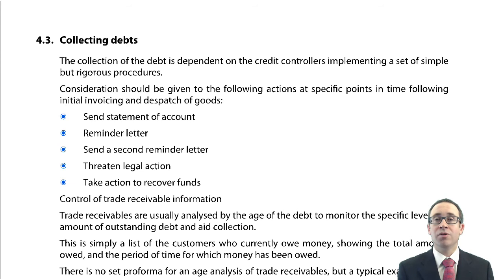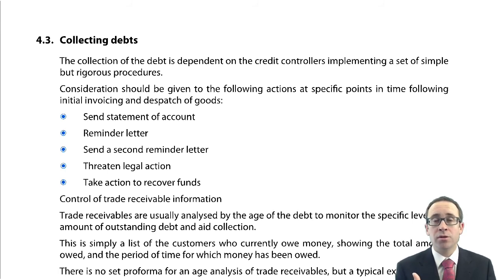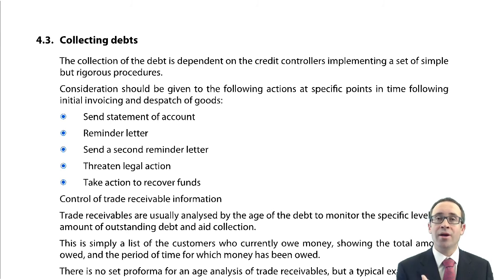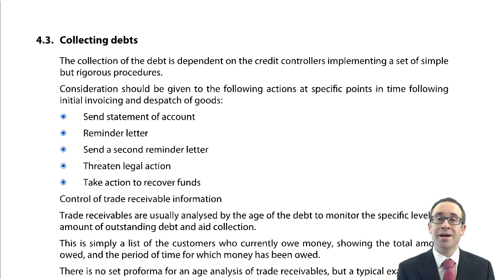That's it for the qualitative section of the notes — covering whether to offer credit, what specific terms to set, and how to manage cash collection. There could be one or two non-computational questions on receivables collection. Next, we move on to the numerical aspects: the interest incurred on receivables, settlement discounts and their impact on financials, and an introduction to invoice discounting and factoring.